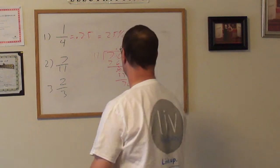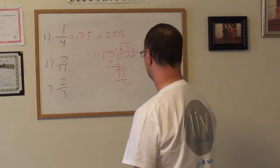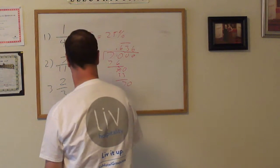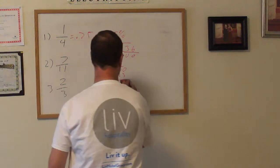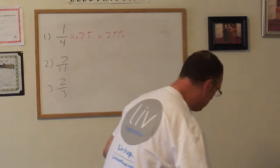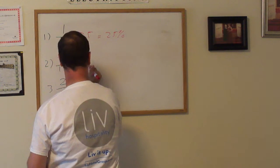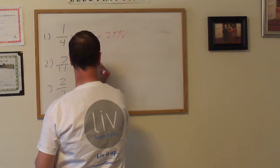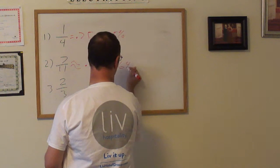0.6363... put a line over it. So approximately, and this is approximately 64%, 0.64. So approximately 0.64, approximately 64%.